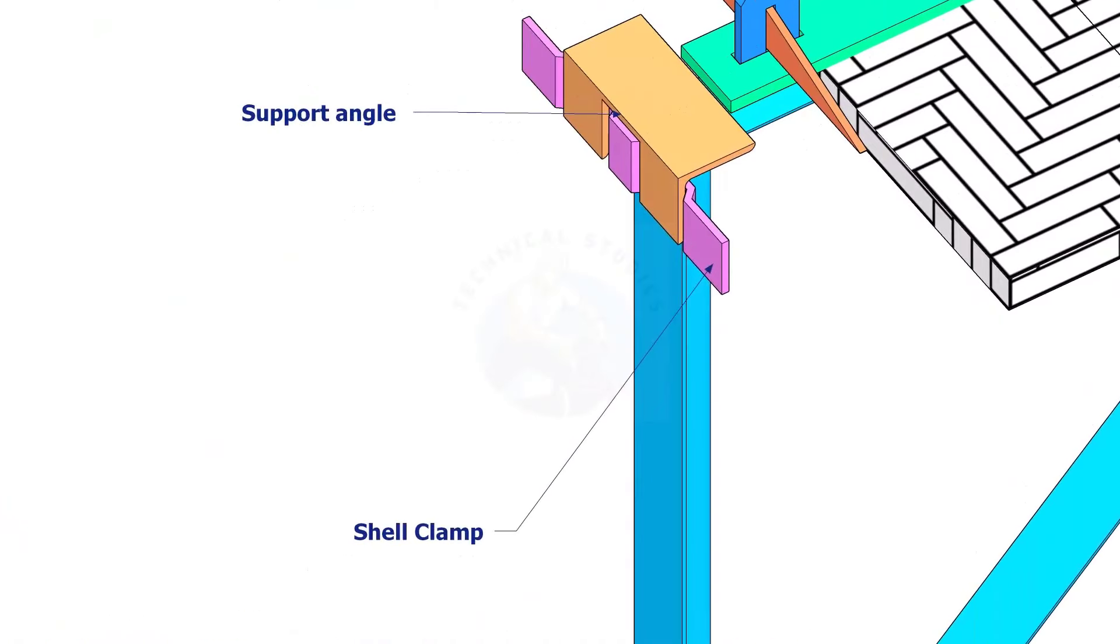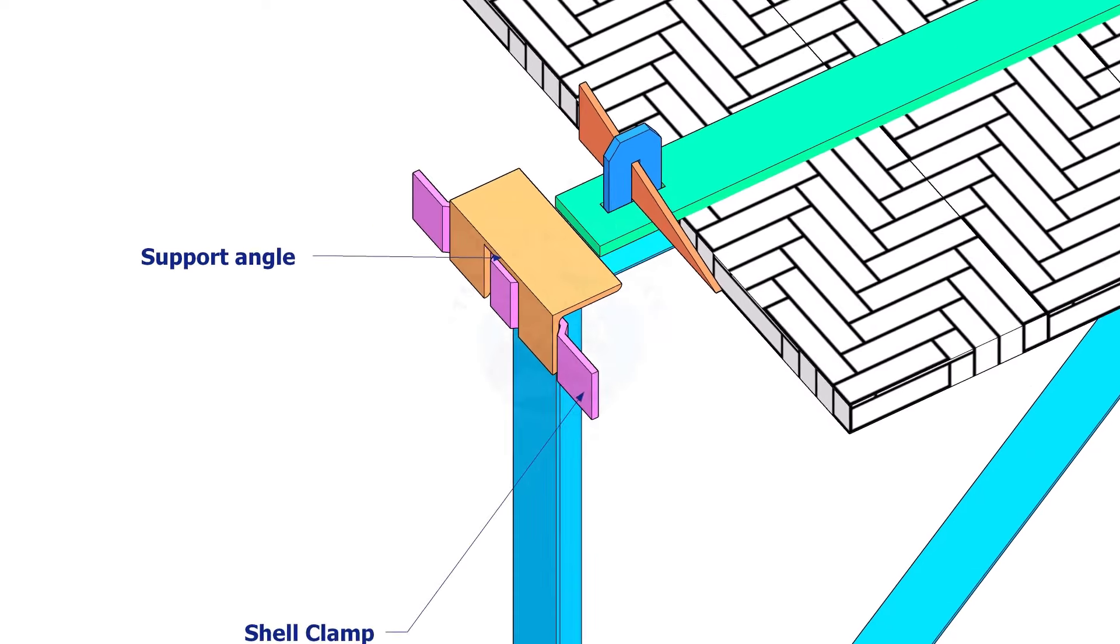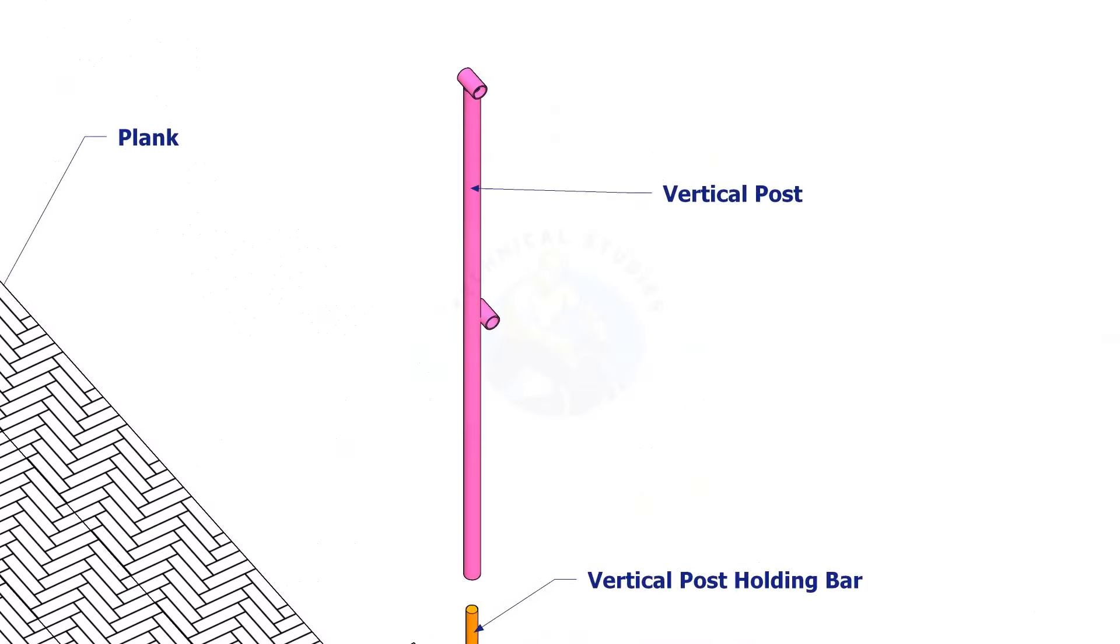Shell clamp shall be welded on the tank. Vertical post will hold the safety wire rope securely.